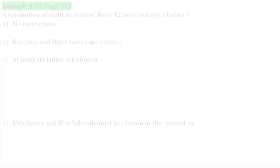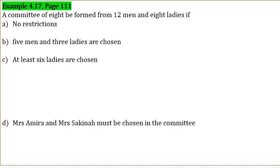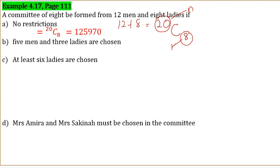Example 4.17, page 111: A committee of 8 is to be formed from 12 men and 8 ladies. Part A — no restriction: total people = 12 + 8 = 20. We choose 8 from 20, so 20C8 = 125,970.